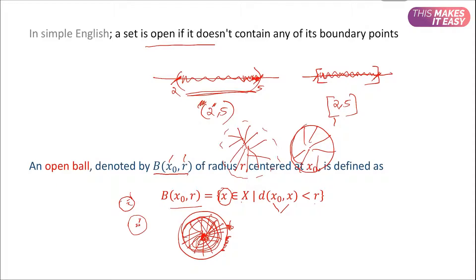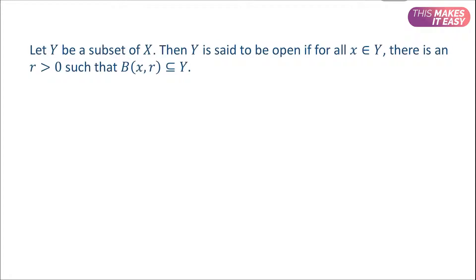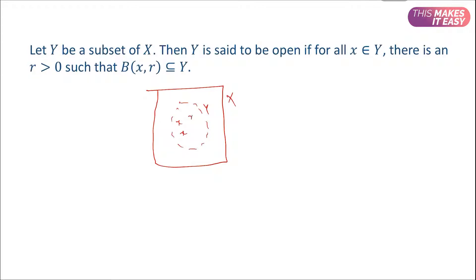Now let us define the open set using the concept of the open ball. We have a metric space X and a set Y as a subset of X. Y is said to be open if for all x element of Y, there exists an r strictly greater than zero such that the open ball around that x is also a subset of Y. Then Y is called open.